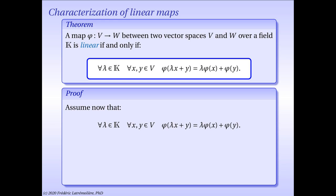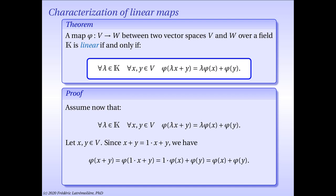Conversely, let us now assume that phi is a map from V to W which has the highlighted property: for all scalar lambda and for all pair of vectors x and y in V, phi of lambda x plus y equals lambda phi of x plus phi of y. I wish to prove that such a phi must be linear. First, I am going to prove that it is additive. Let x and y be two vectors in V. Since V is a vector space, 1 times x equals x. Hence x plus y equals 1 times x plus y. Applying phi to this identity, we get that phi of x plus y equals phi of 1 times x plus y, but using the highlighted property this equals 1 times phi of x plus phi of y, and 1 times phi of x is simply phi of x. So we have shown that phi must be additive.